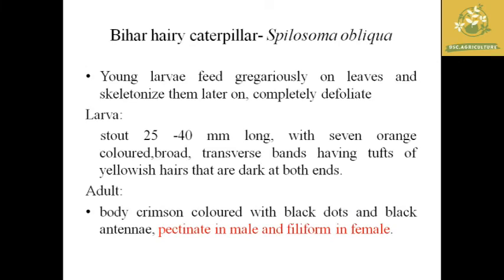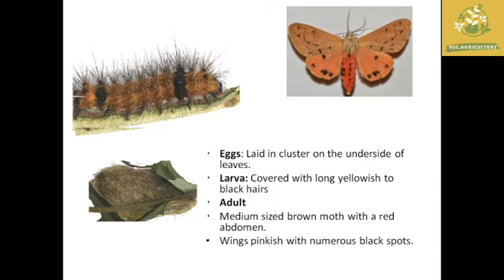The next pest is the Bihar hairy caterpillar, with the scientific name Spilosoma obliqua. It is a gregarious feeder that can completely defoliate the whole plant in extreme cases. The larva is stout, around 25 to 40 mm in length, with dull colored yellowish hairs at both ends with dark marks. The adult is crimson colored with black spots, and has pectinate antennae in males and filiform antennae in females. Eggs are laid in lower clusters; larvae are long and yellowish to black in color. The adult is a brilliantly sized moth with a red abdomen and pinkish wings with numerous black spots.